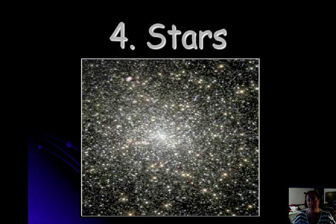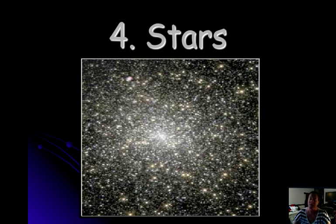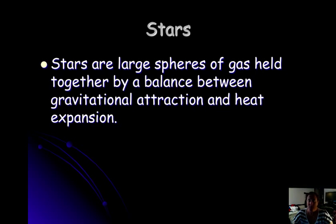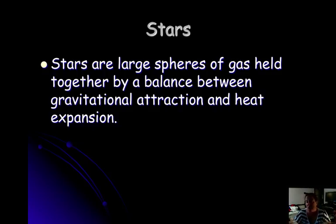We have one star in our solar system — the sun — but we see plenty of stars in the night sky, many more if you go to places with less light pollution. Stars are simply large spheres of gas held together by a balance between gravitational attraction and heat expansion. Gravity pulls it in, heat expansion pushes it out — this is dynamic equilibrium, and that's what holds the star together.